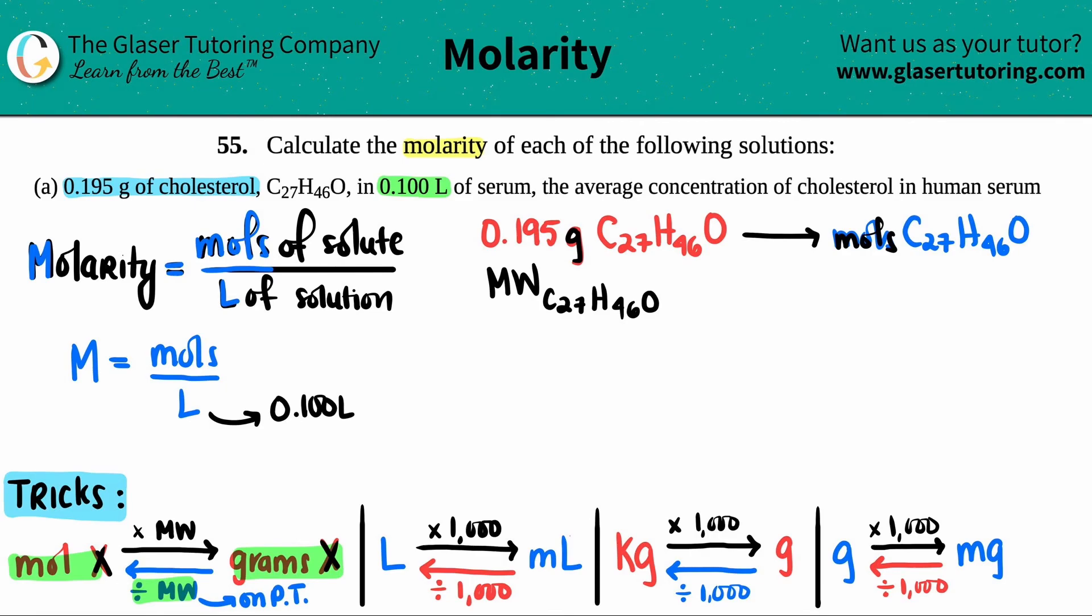We just have to go to the periodic table. Keep in mind, when finding the mass, we have 27 carbons, 46 hydrogens, and one oxygen. Make sure you do that in your calculations. I'm gonna use the exact values.